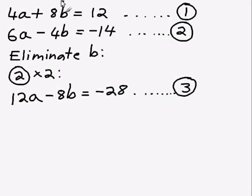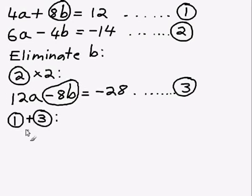So I have an 8b in equation 1, and I have a negative 8b in equation 3. So if I add these two equations together, what I'm going to be able to do is eliminate b. So I'm going to write down that I'm going to add equation 1 and 3 together.